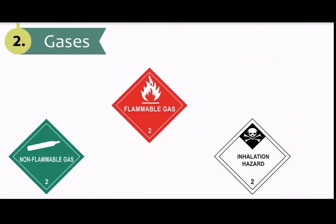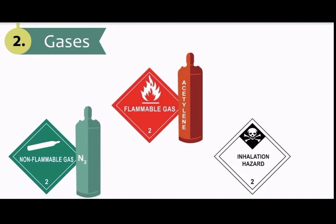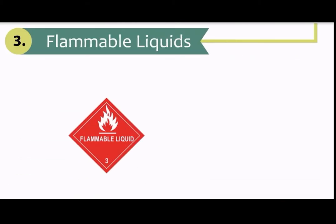Class 2: Gases. Class 2 is broken down into three divisions. Division 2.1 is flammable gas such as acetylene. Division 2.2 is non-flammable compressed gas such as nitrogen. Division 2.3 is poisonous gas such as chlorine.